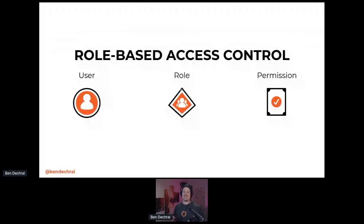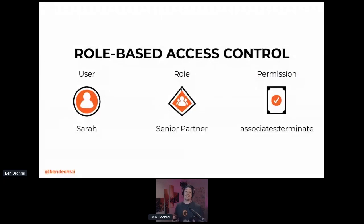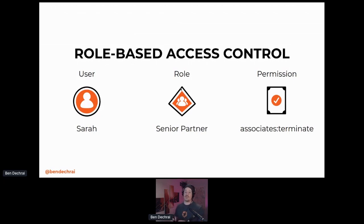Role-based access control assigns roles to users, but direct permission assignment makes management really hard. For example, if Sarah is a senior partner at a law firm, we know she's allowed to terminate associates. We could assign that permission directly to her, but then we'd have to do that for every senior partner, and if she gets demoted we'd have to remove it. If we make sure the roles are always up to date and the roles have the permissions, it makes management a lot easier.